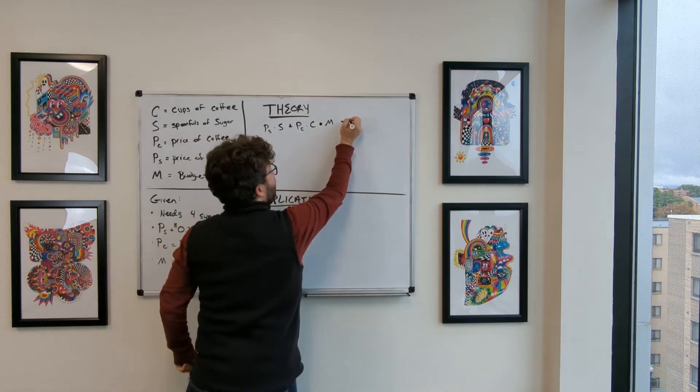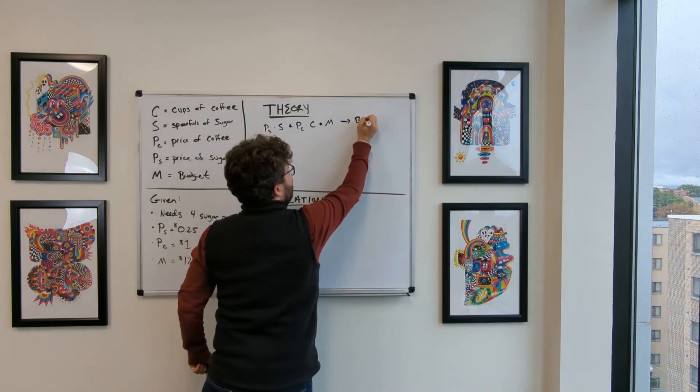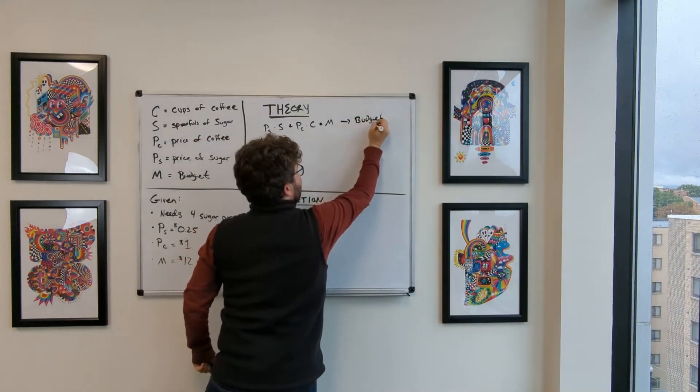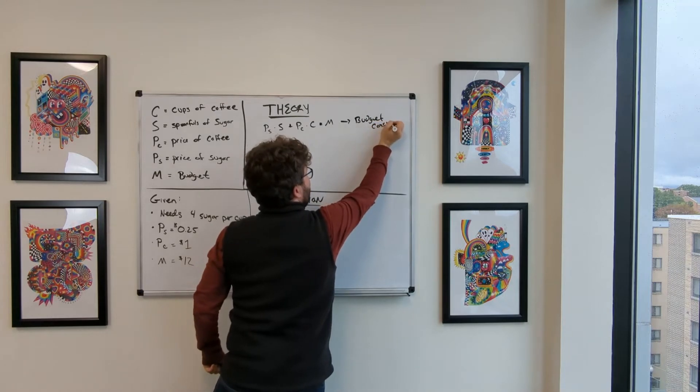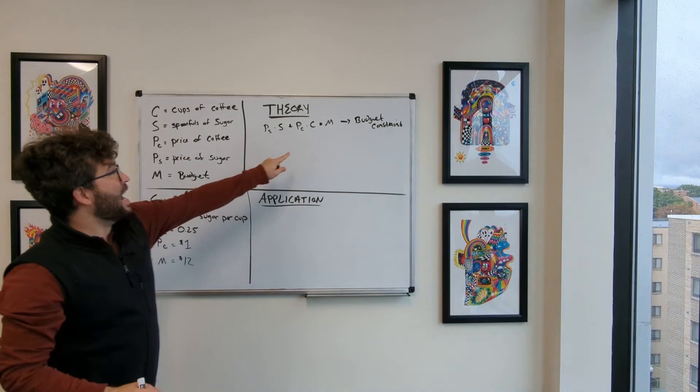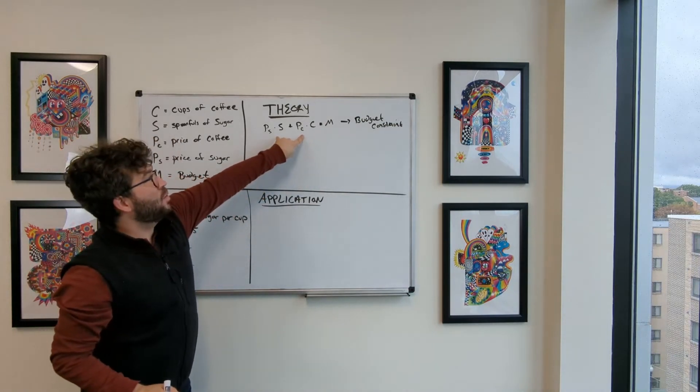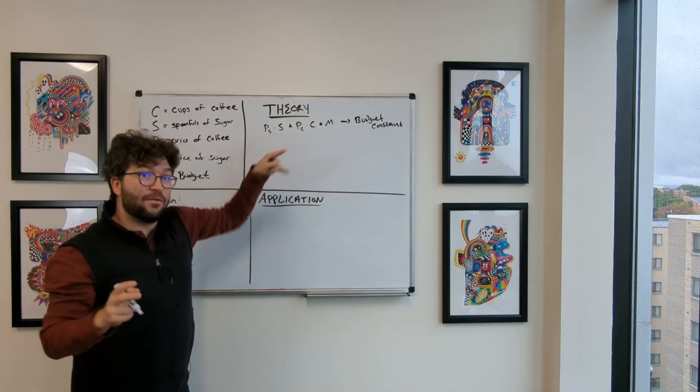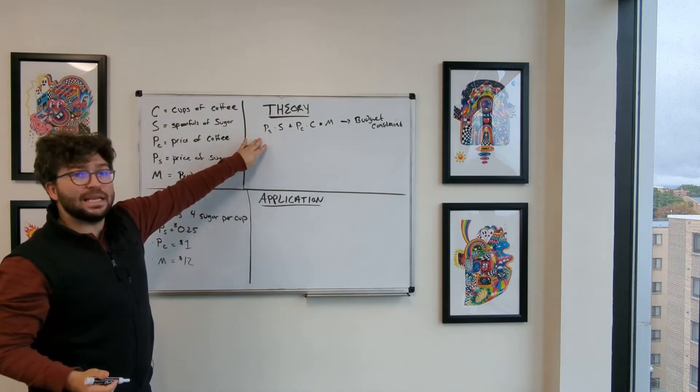So this is what we call our budget constraint. We are constrained by our budget, and this is what we need to spend to optimize this problem. This is going to be key.